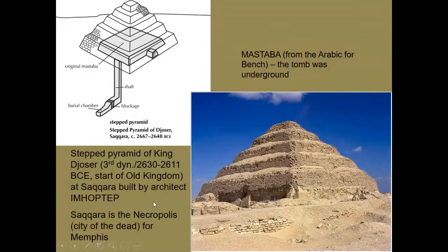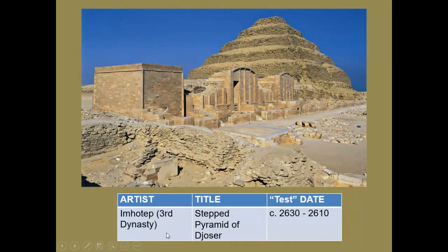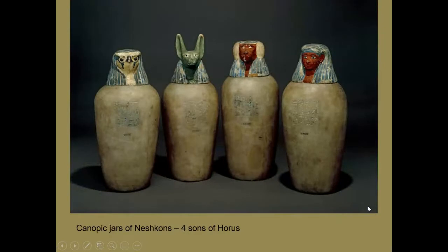Moving into the dynastic era, we can see the funeral structure for King Djoser, which represents the step between the mastaba tradition and the flowering of pyramid building in the Old Kingdom. This structure is essentially a series of mastabas stacked one on top of the other, but it doesn't have the smooth perfection we associate with the later Egyptian pyramids. We also know the name of Djoser's chief architect, Imhotep — an important fact to remember.